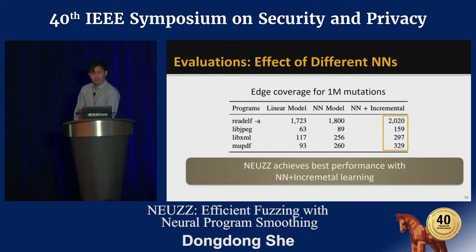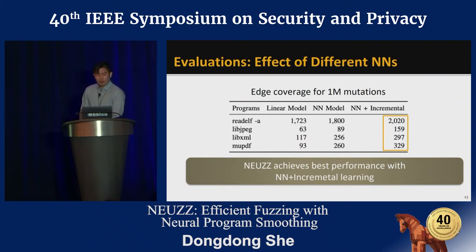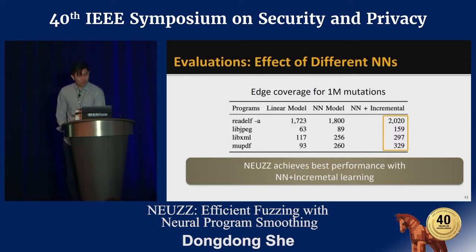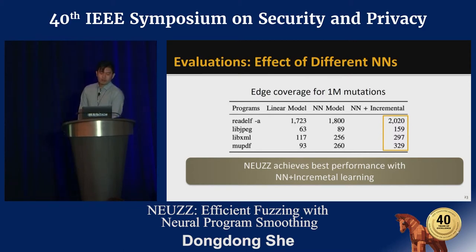In the end, we evaluated NOOS on three different neural network settings: a simple linear model, a neural network model, and a neural network model with incremental learning on one million fixed mutations. The results show that NOOS achieves the best performance with the neural network plus incremental learning.